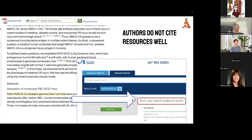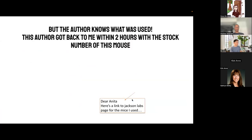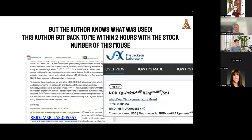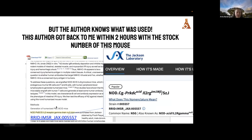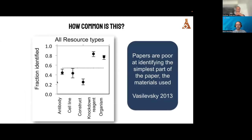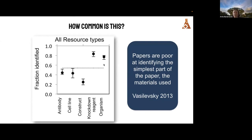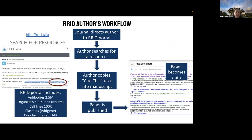When you try to look for this mouse, it doesn't actually exist in the place where most people find mice, which is on the internet. But when I talked to the author, they knew exactly which mouse it was and gave me a link to it. So why wouldn't they just put that in the paper? Our colleagues at OHSU did a survey of all different resource types and figured out how many of these things can just be identified. That simple question — which one did you use? — can't be answered about 50% of the time. And that's terrible.